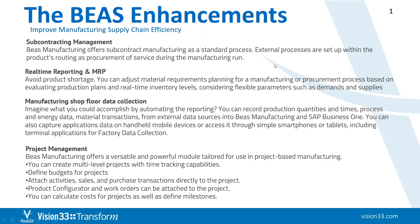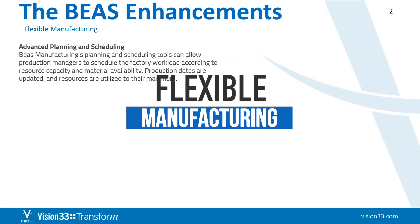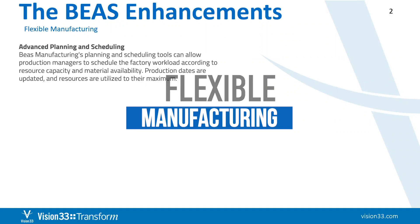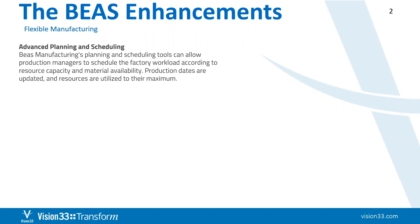What about flexible manufacturing? Sometimes everything isn't just off the shelf — there's a lot of flexibility required to meet customer demands. Beyond MRP is what we refer to as advanced planning and scheduling. Bayes Manufacturing's planning and scheduling tool will really allow you, as a production manager, to schedule the factory workload according to all of your resource capacities, material availabilities, personnel availability, and production dates can be updated and resources utilized to their maximum based on up-to-the-minute adjustments. What if somebody doesn't show up to work today? This advanced planning and scheduling will help you compensate for additional or fewer availabilities of those kinds of resources in real time.